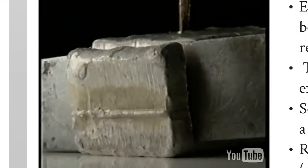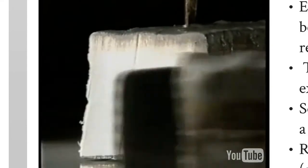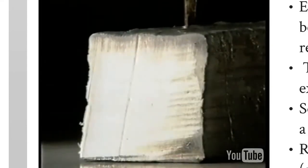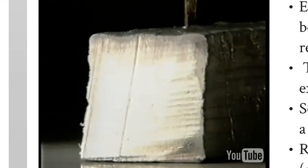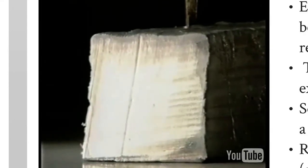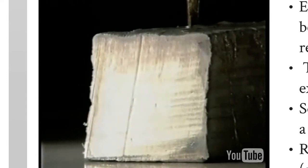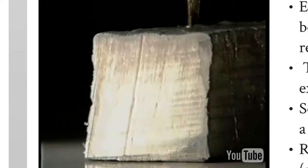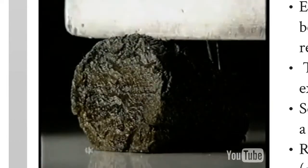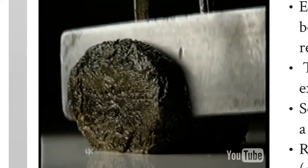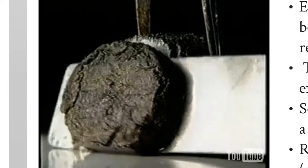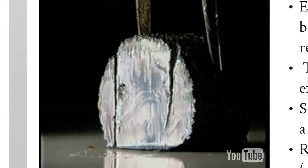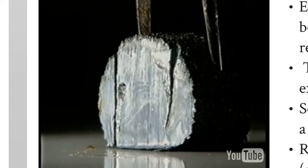This is sodium. It's even easier to cut and again the shiny surface soon discolours. Potassium is even softer and reacts so quickly it tarnishes immediately.